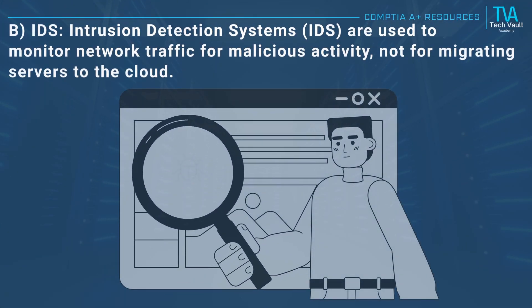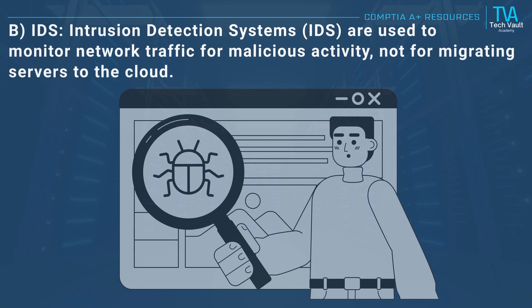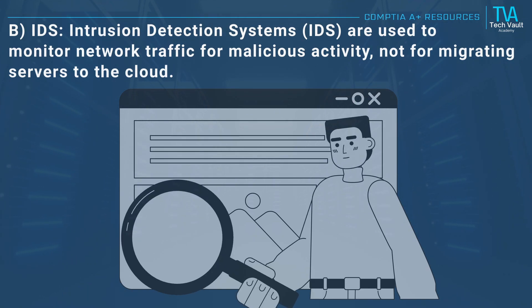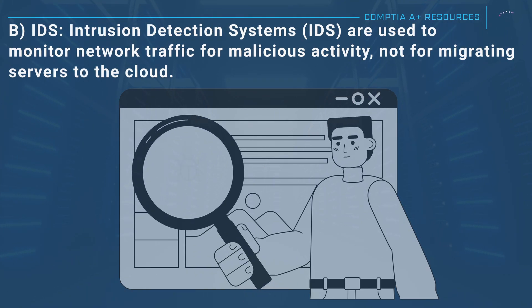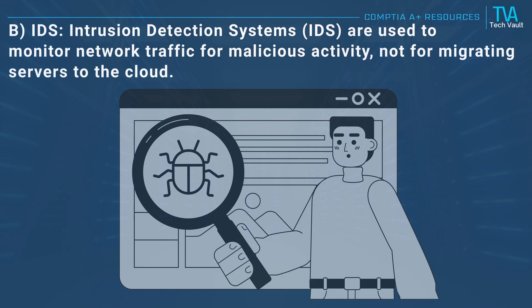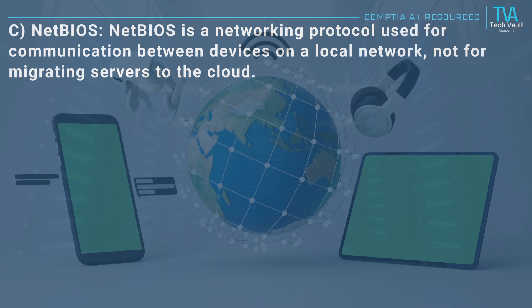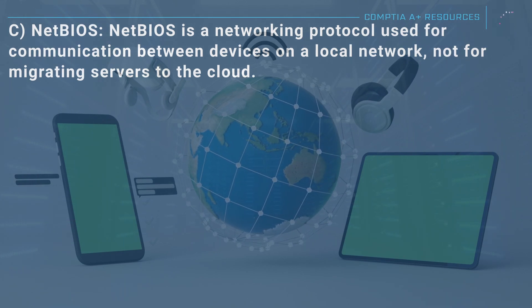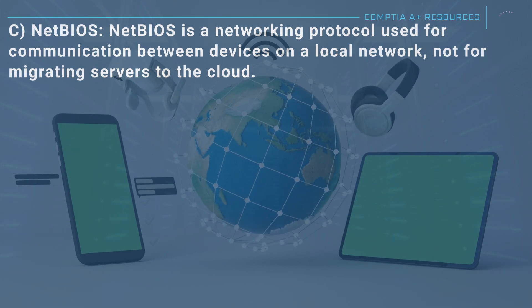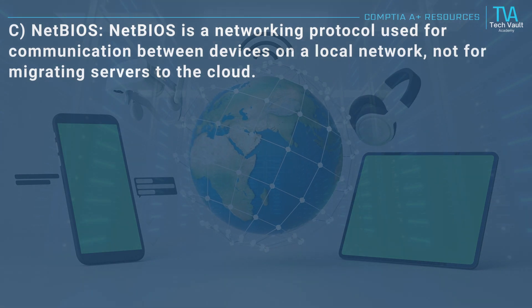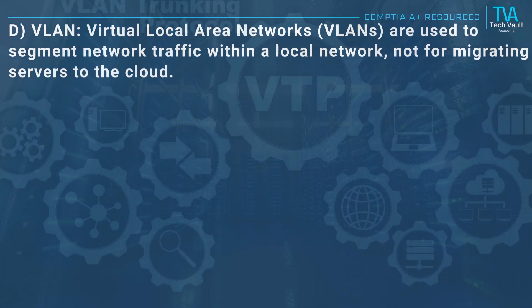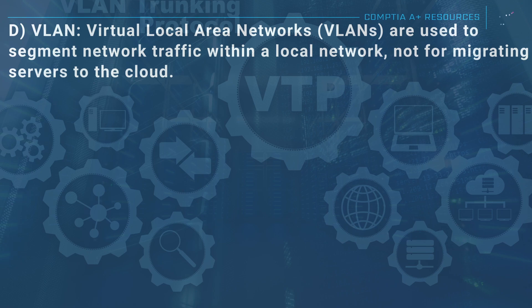B, IDS: intrusion detection systems are used to monitor network traffic for malicious activity, not for migrating servers to the cloud. C, NetBIOS: NetBIOS is a networking protocol used for communication between devices on a local network, not for migrating servers to the cloud. D, VLAN: virtual local area networks are used to segment network traffic within a local network, not for migrating servers to the cloud.